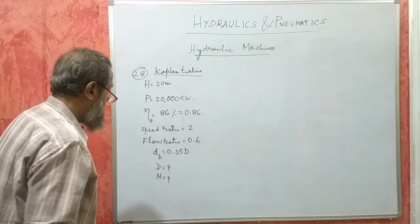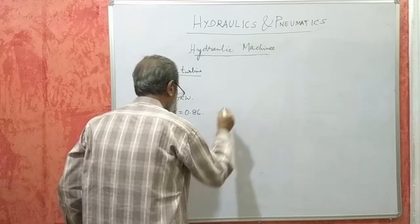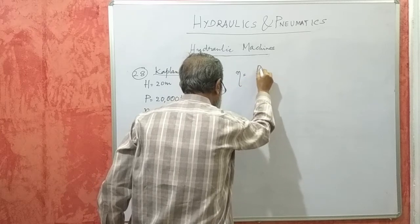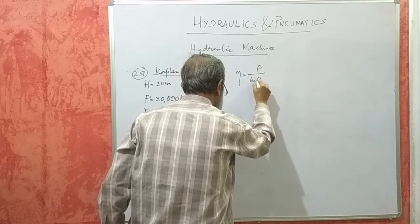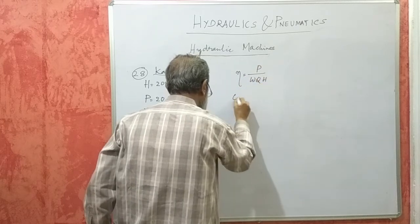Now, first what we do is efficiency is equal to P by WQH. From here, I can get Q.